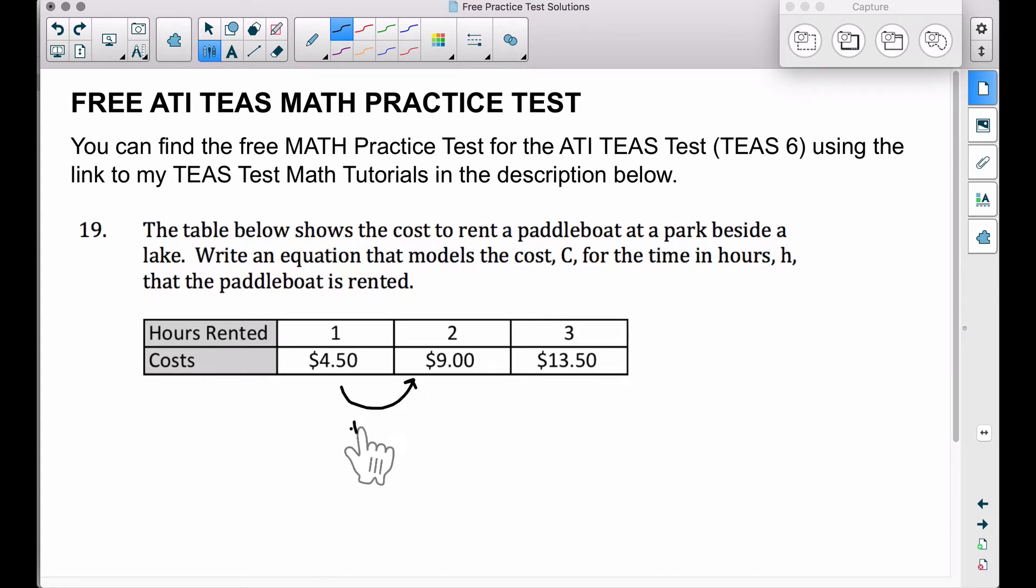If you look at the trend here, each time we are increasing the cost by $4.50. We can find an equation for the cost C: it's going to be equal to $4.50 times H, where H is the number of hours that you rent the paddleboat.